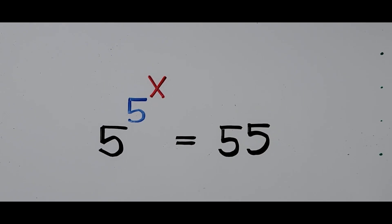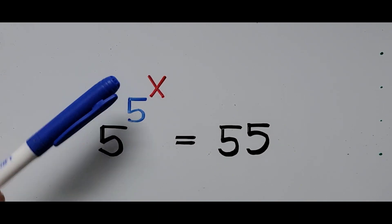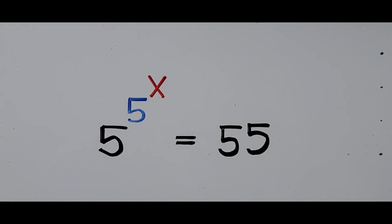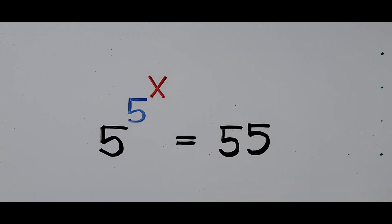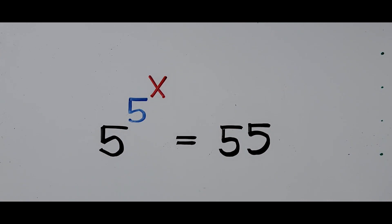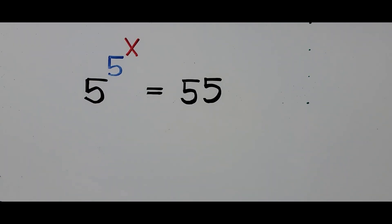Hello everyone, we have an exponential equation: 5 to the power of 5^x is equal to 55, and we're solving for the value of x. I'll be presenting two ways to solve this equation, both using logarithm. For the first method, we'll be doing substitution as a first step, since the value of 55 cannot be transformed into exponential form.